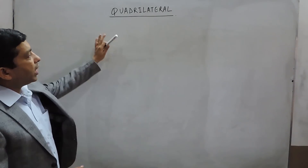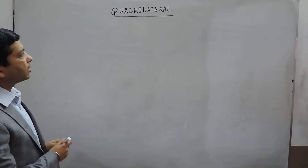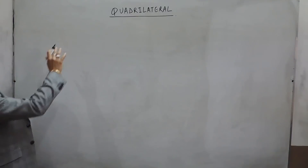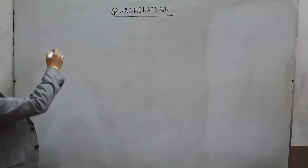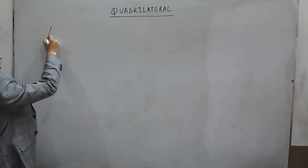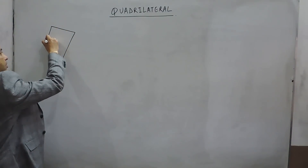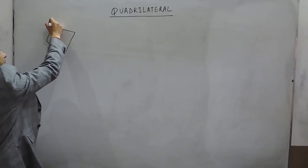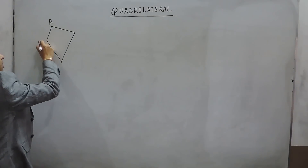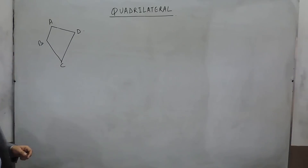Hello everyone, today we will discuss quadrilaterals. As we already know about polygons, quadrilaterals are basically four-sided closed figures. Any figure which has four vertices is known as a quadrilateral.